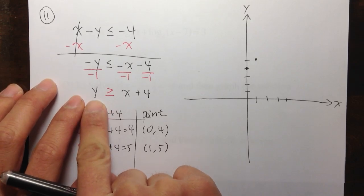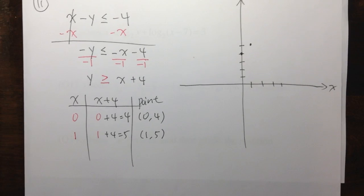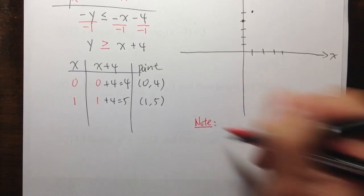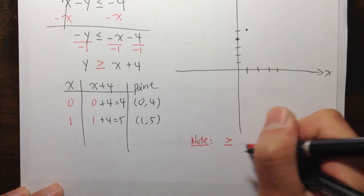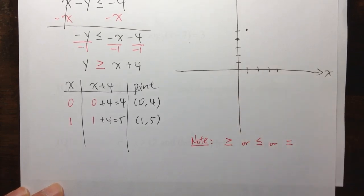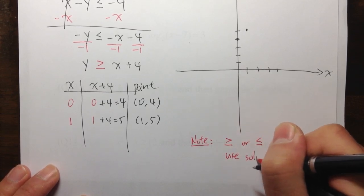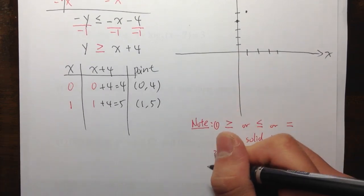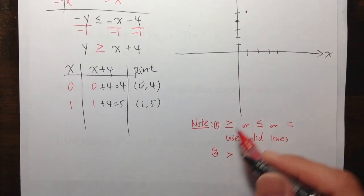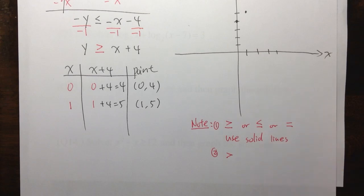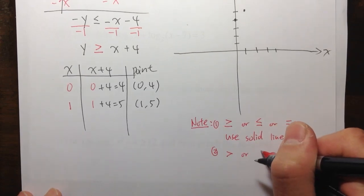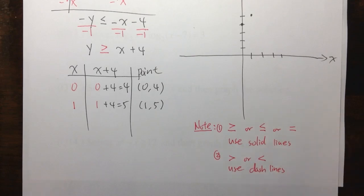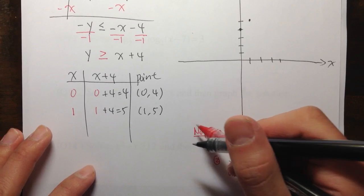First, we have an inequality — we have y is greater than or equal to. So let me drop down some notes. For the symbols greater than or equal to, less than or equal to, or just equal to, we use a solid line. If you have just greater than or less than with no equal sign, we don't include that specific line, so we use dashed lines or dotted lines.